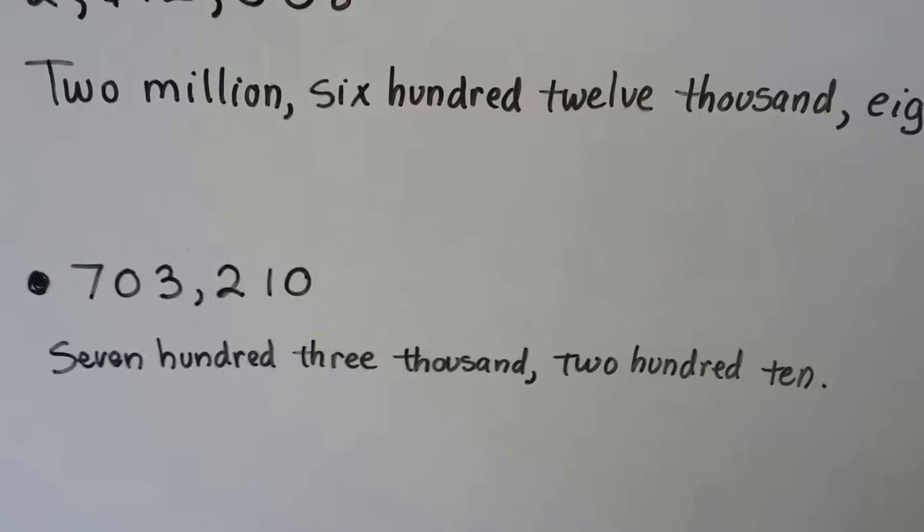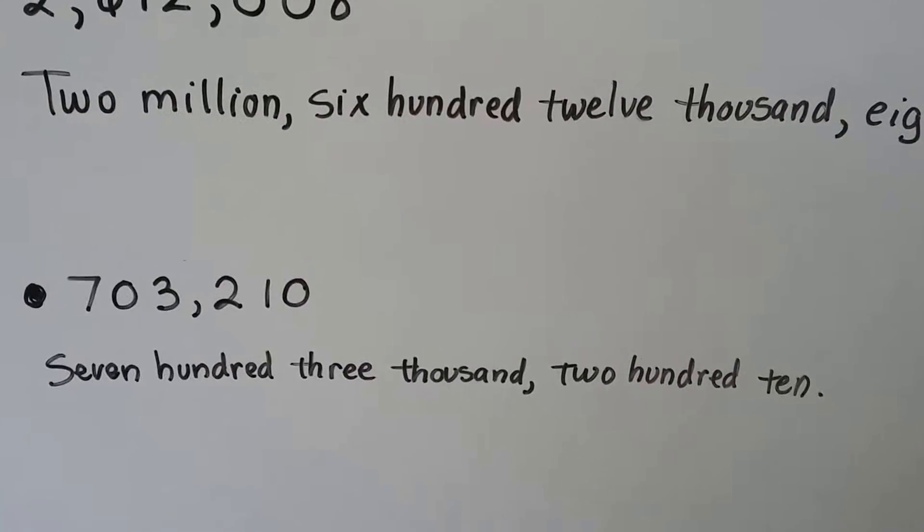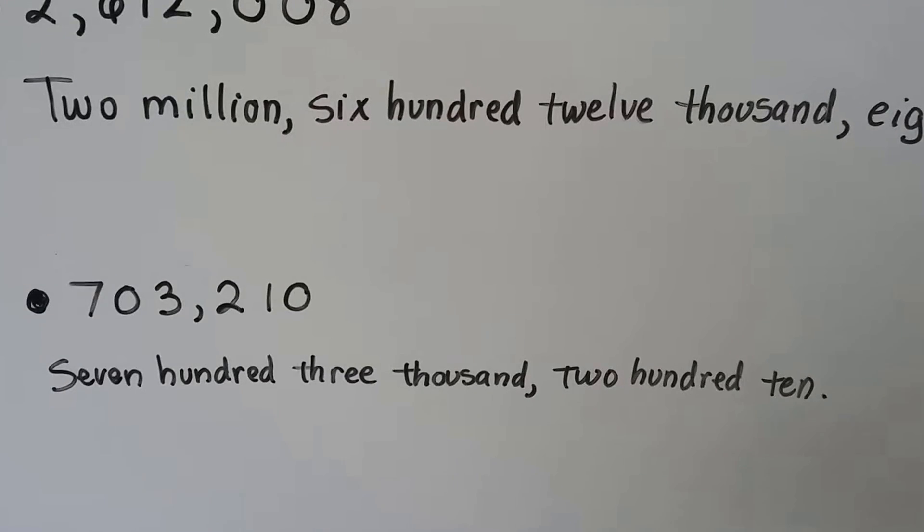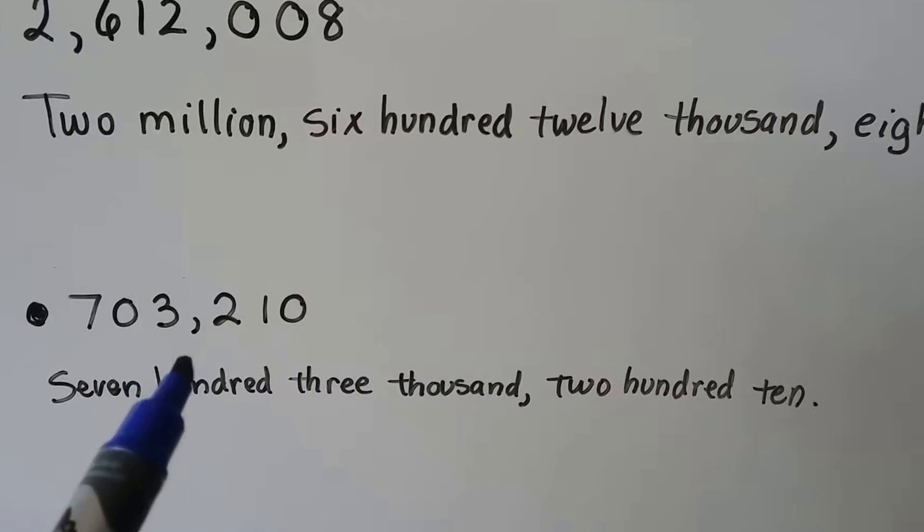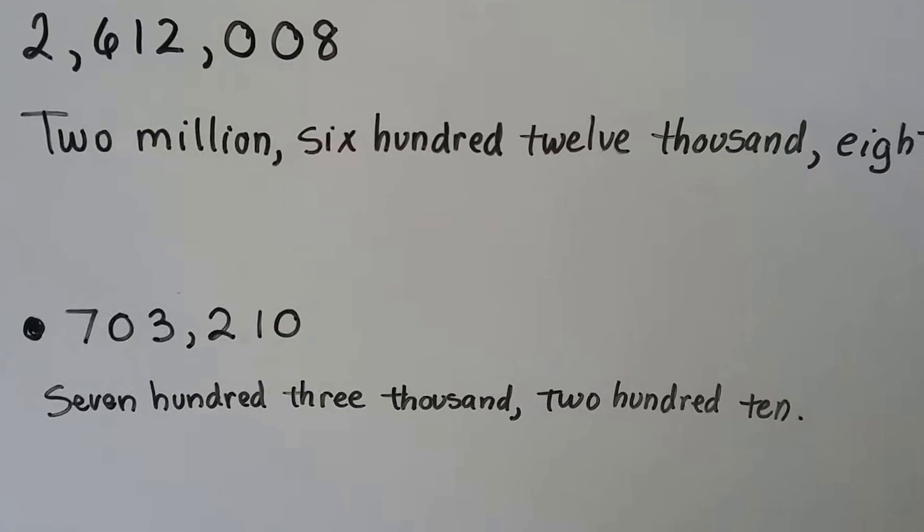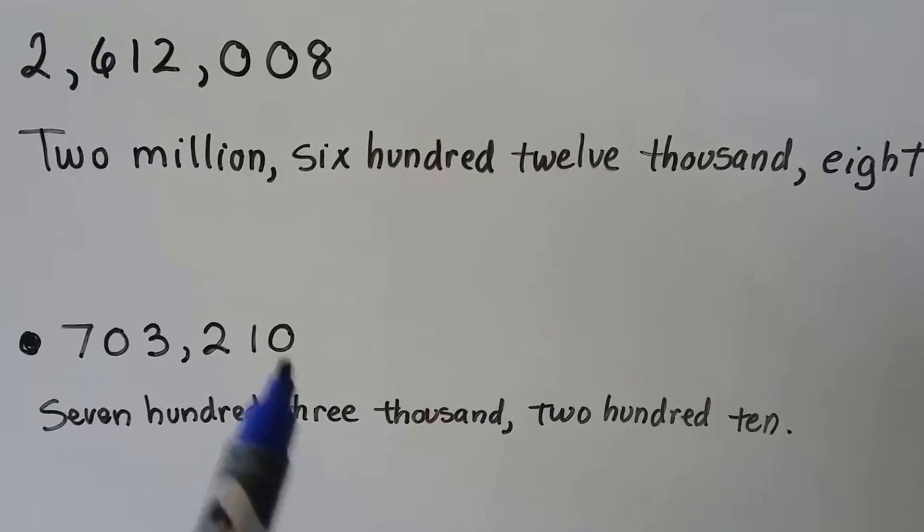This one would be seven hundred three thousand two hundred ten. There's a comma after the three thousand. There's no one, so we just say ten.